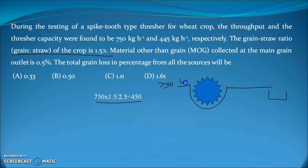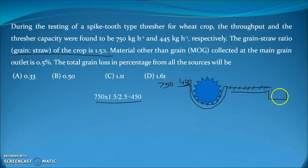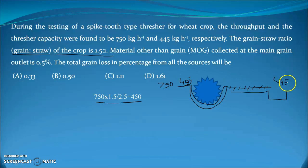So 450 kg of grain is the input to the thresher. It enters, gets threshed, then goes through the sieve where it is separated from the straw and other material. Finally at the grain outlet, the output is 445 kg per hour. So 450 kg is the grain input and 445 kg is the grain outlet output.